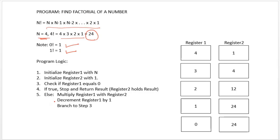The program logic we are going to implement: we will initialize one register with a value of n, and initialize another register — where we store all intermediate results as well as the final result — with a value of 1. We perform the factorial computation in multiple iterations.